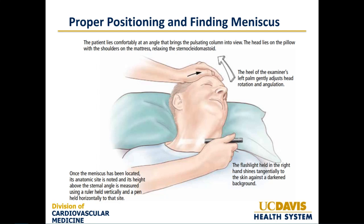Another key component to the assessment of jugular venous pressure is proper positioning and finding the actual meniscus — the top of the column. The patient must lie comfortably at an angle that brings the pulsating column into view, often at 10, 30, or even 45 degrees. The head lies on the pillow with the shoulders on the mattress, relaxing the sternocleidomastoid muscles. The heel of the examiner's left palm gently adjusts head rotation. In the right hand, one carries a flashlight so that tangential light can be directed toward the right neck. The contact the physician has with a patient is part of the art of medicine.